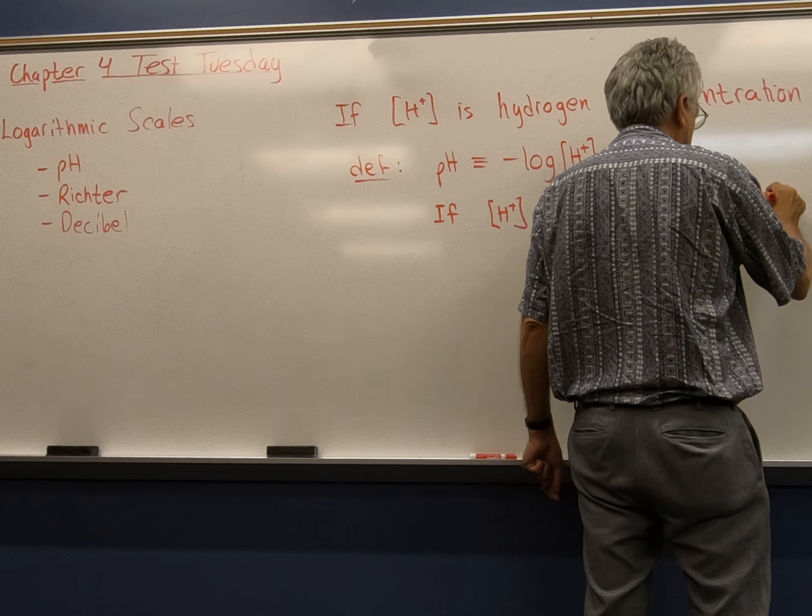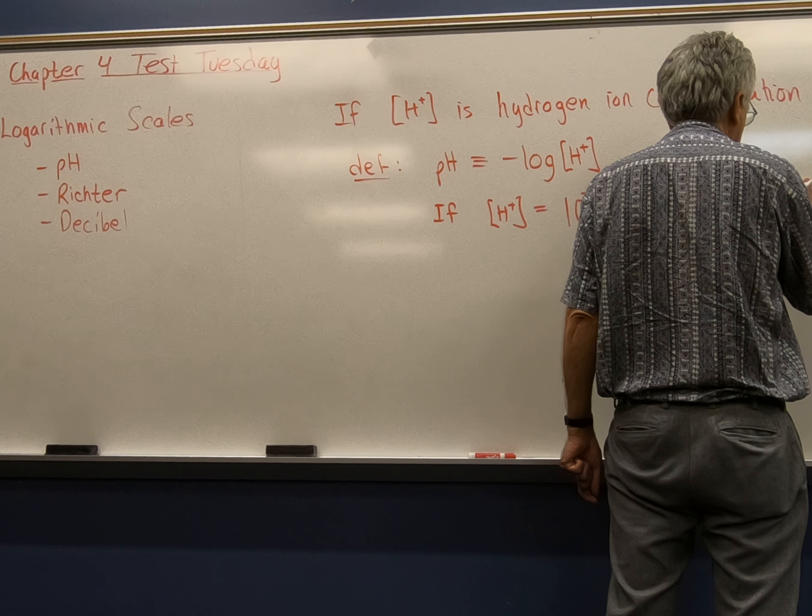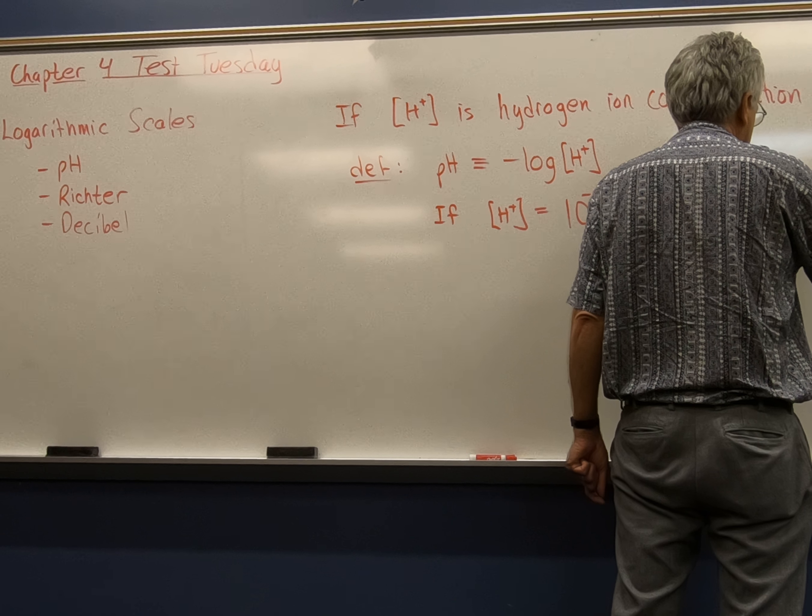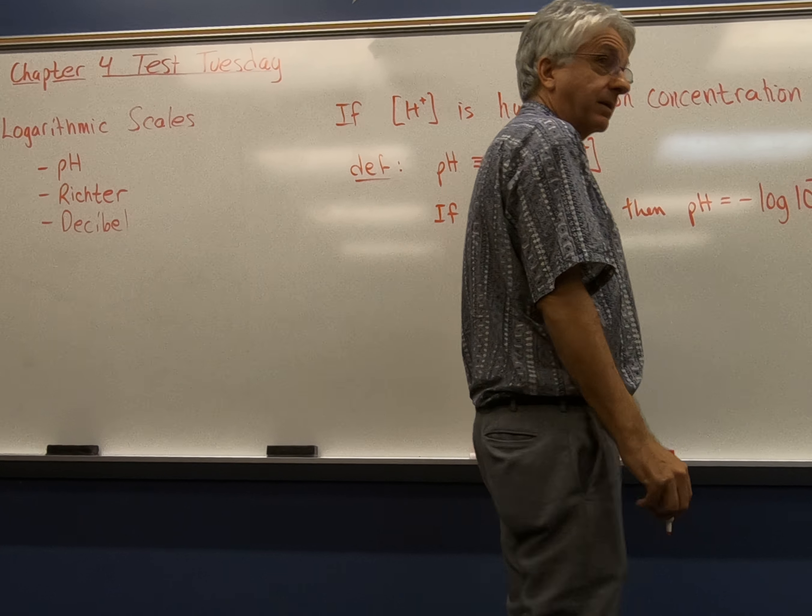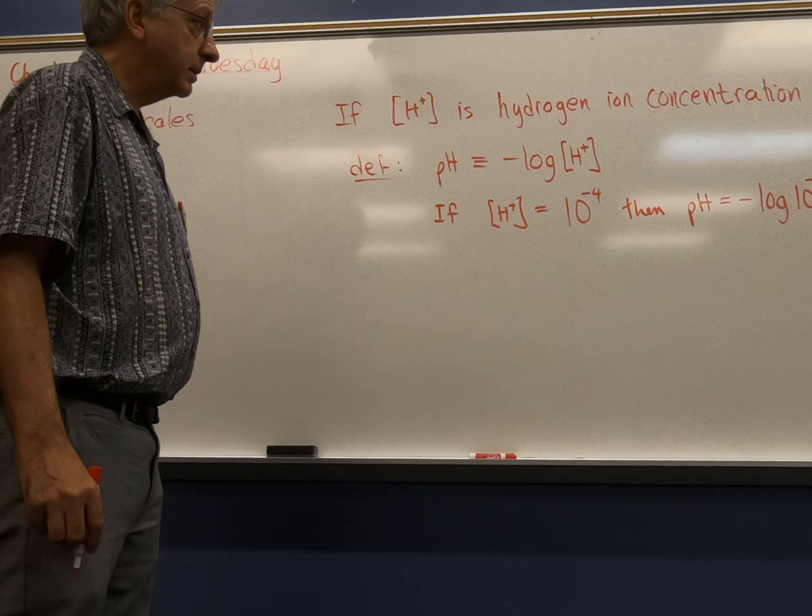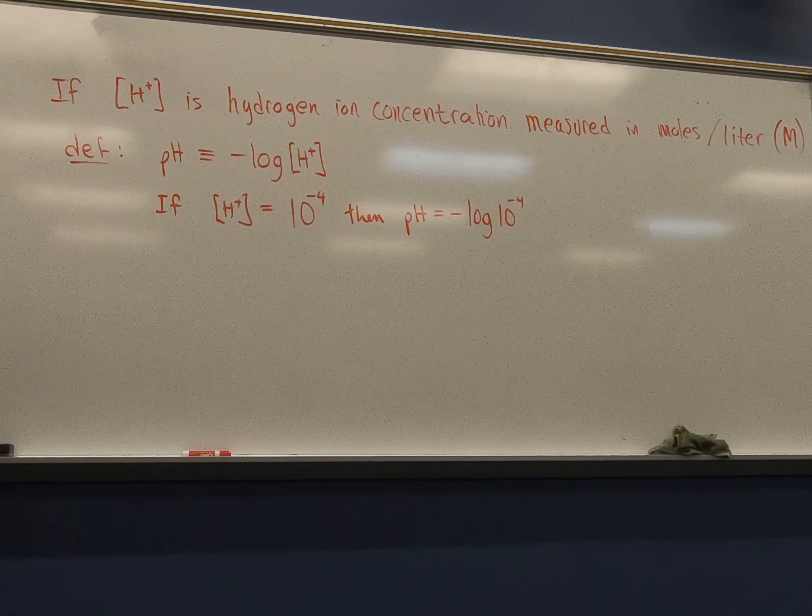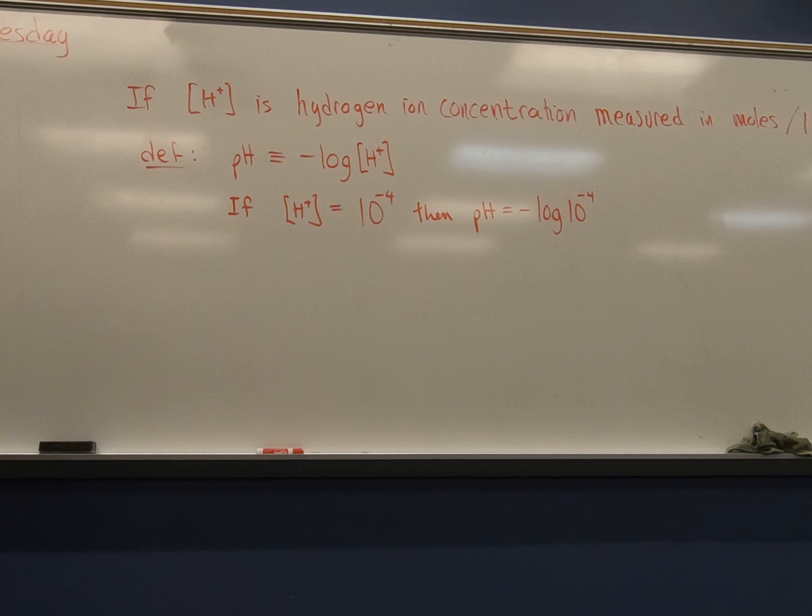That would mean like one in every 10,000 molecules. So, then what would the pH be? That's going to be the negative log of, well, 10 to the negative fourth. And this is a Grant's tomb situation. What exponent do you write, raise 10 to, to get 10 to the negative fourth?